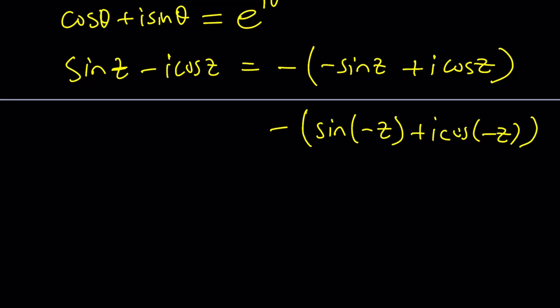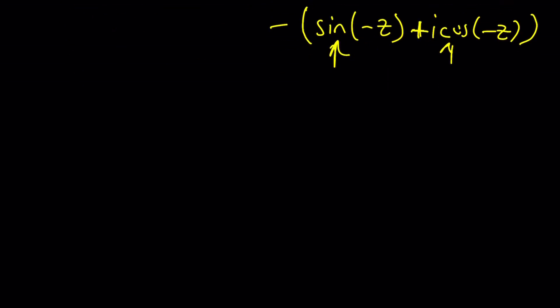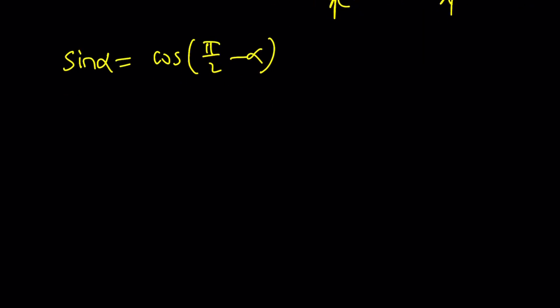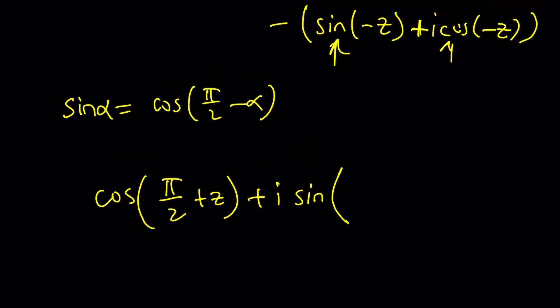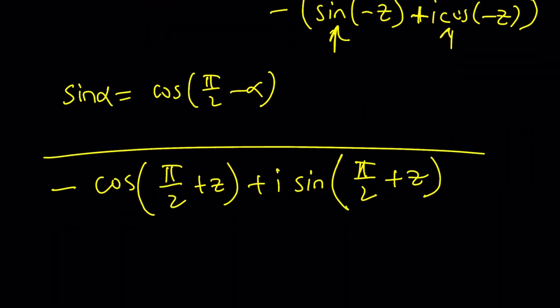We were able to change it into a single angle with a plus sign. Now what we need to do is change the sine and cosine. Sine of alpha can be written as cosine of pi over 2 minus alpha. So sine of negative z is basically cosine of pi over 2 plus z. Cosine of negative z would be sine of pi over 2 plus z. We still have a minus sign in the front.